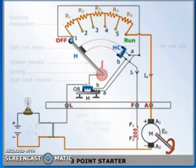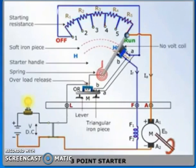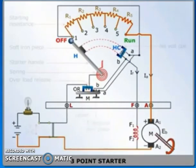Function of overload release coil: The motor current at which the overload release operates can be adjusted merely by varying the distance between the electromagnet and movable soft iron arm.